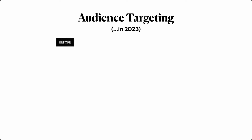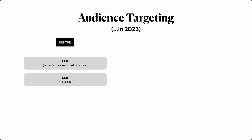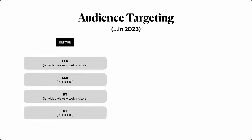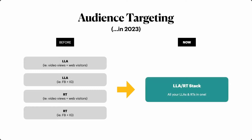Moving on to lookalike and retargeting audiences: before, you might have a lookalike audience ad set of people who viewed your ads or visited your music links, another lookalike of people who engaged with your Facebook or Instagram, and then separate retargeting ad sets for video views, web visitors, and Facebook and Instagram custom audiences. It was a lot more complex. Now it's much easier — just have one lookalike and retargeting stack, throw every single lookalike and custom audience you want to retarget into that one ad set. That's all you really need.